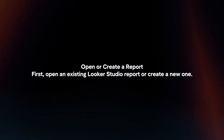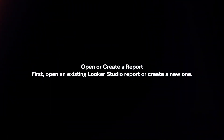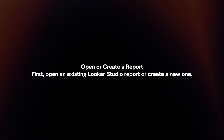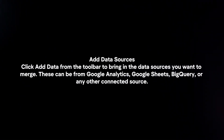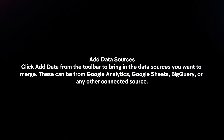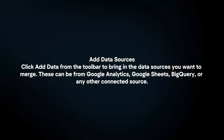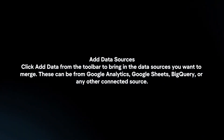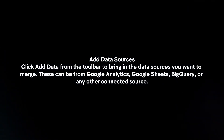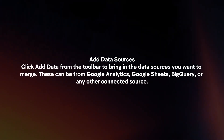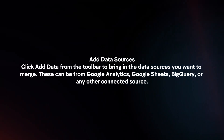First, open an existing Looker Studio report or create a new one. Then, click Add Data from the toolbar to bring in the data sources you want to merge. These can be from Google Analytics, Google Sheets, BigQuery, or any other connected source.